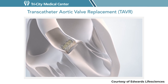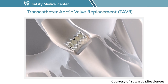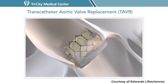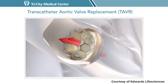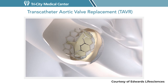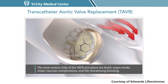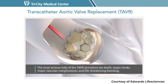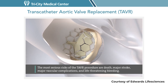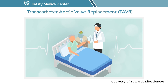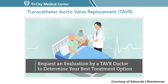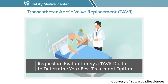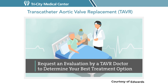The frame of the Edwards Sapien III transcatheter heart valve is strong and will use the calcified leaflets of your diseased valve to secure it in place. Once in place, the Sapien III valve begins functioning immediately, with the leaflets opening and closing to pump blood to the rest of your body. The most serious risks of the TAVR procedure are death, major stroke, major vascular complications, and life-threatening bleeding. If you or someone you know has severe aortic stenosis, only a TAVR heart team can determine which treatment option is best for you. Ask your doctor to refer you for a TAVR evaluation.